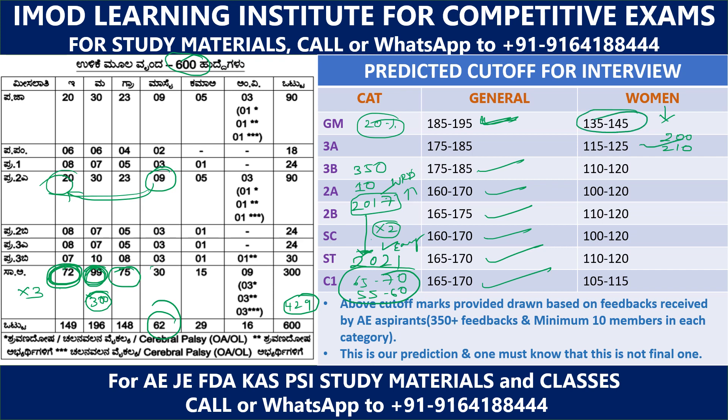Coming to the cut-off prediction ranges by category: General 100 to 120, 2A 100 to 120, 2B 110 to 120, SC 100 to 120, ST 110 to 120, and Category 1 105 to 115.